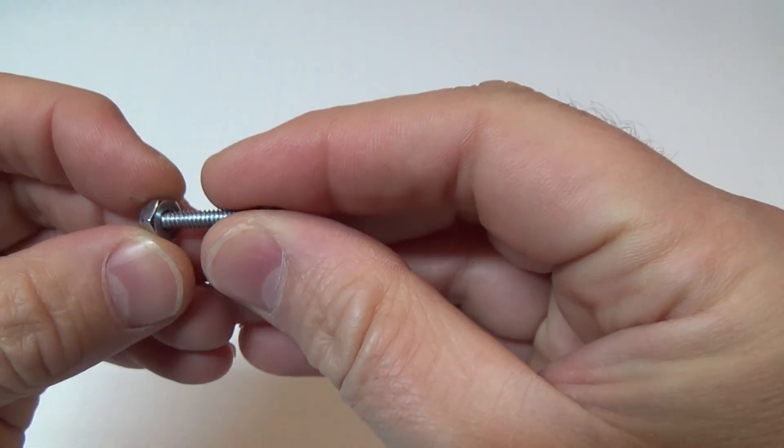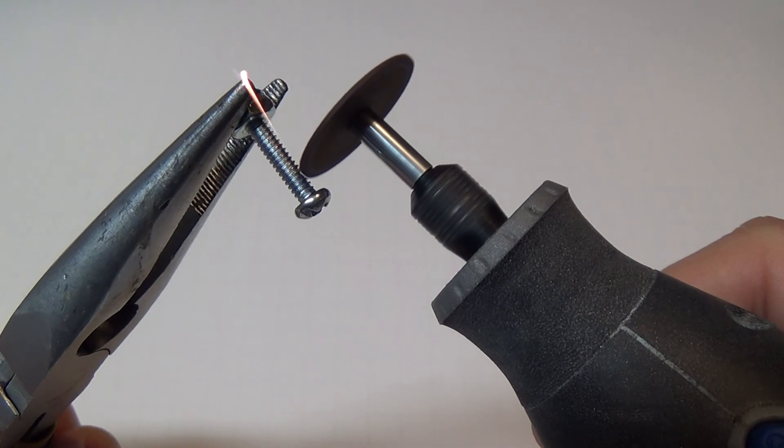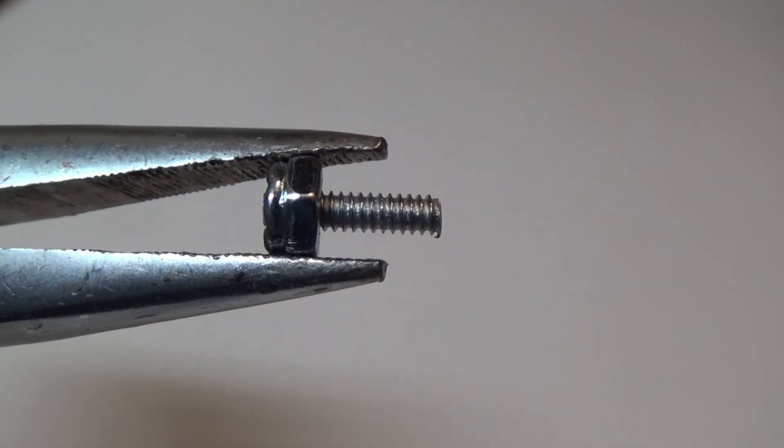Now first of all use some pliers to hold the nut and then screw the bolt into it. That way we have something to grip it with as we cut off the head of the screw. All we need here is a length of threads about a half inch long or maybe three-quarters of an inch long.